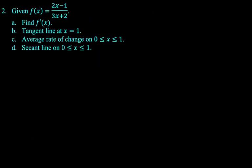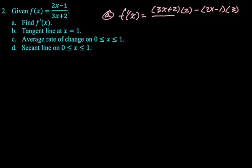Given f of x equals 2x minus 1 over 3x plus 2, we want to find f prime of x, the tangent at x equals 1, the average rate of change on 0 to 1, and then the secant line on 0 to 1. Alright, so for part A, instead of the limit definition, I'm going to use the quotient rule. So the quotient rule is bottom times the derivative of the top, minus top times the derivative of the bottom, all over the bottom squared.